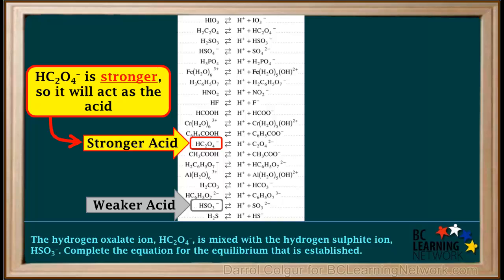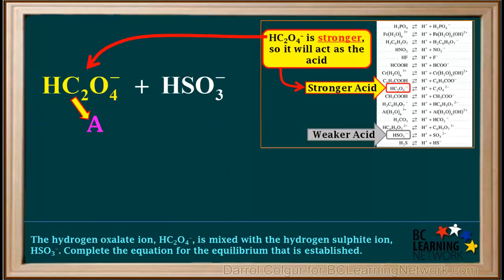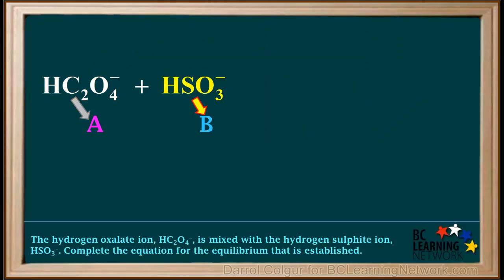The stronger acid of the two, the HC₂O₄⁻, is the one that will play the role of the acid. So we'll label the HC₂O₄⁻ as the acid on the left side of the equation, and the HSO₃⁻ will have to play the role of the base. A proton is transferred from the acid to the base.